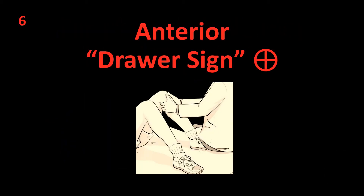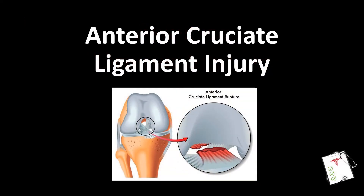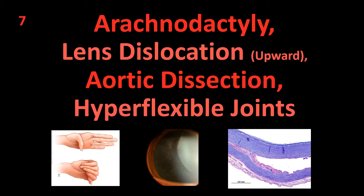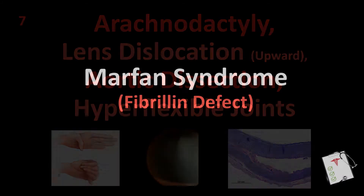Number 5: Anaphylaxis following blood transfusion. Answer: IgA deficiency. Number 6: Anterior drawer sign. Answer: Anterior cruciate ligament injury. Number 7: Arachnodactyly, lens dislocation, aortic dissection, hyperflexible joints. Answer: Marfan syndrome — fibrillin defect.